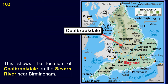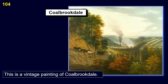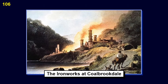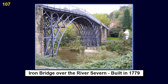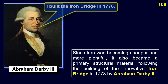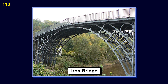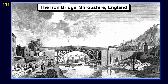This shows the location of Coalbrookdale on the Severn River near Birmingham. This is a vintage painting of Coalbrookdale and another vintage painting of Coalbrookdale, as well as a vintage painting of the ironworks at Coalbrookdale. This is the iron bridge over the River Severn, built in 1779. Since iron was becoming cheaper and more plentiful, it also became a primary structural material following the building of the innovative iron bridge in 1778 by Abraham Darby III. This is an aerial view and a drawing of the iron bridge over the River Severn.